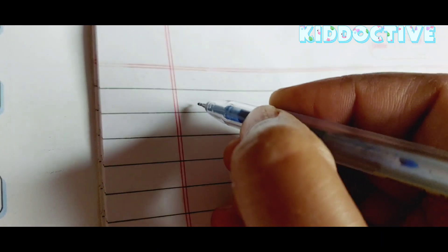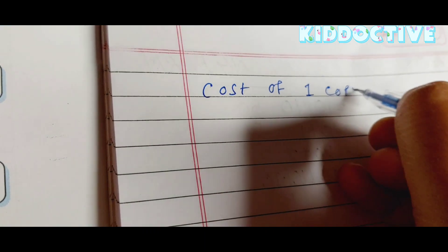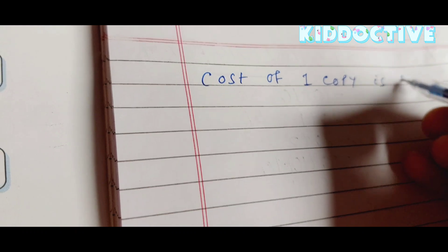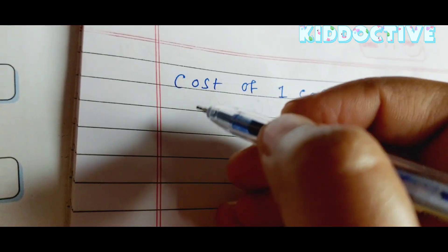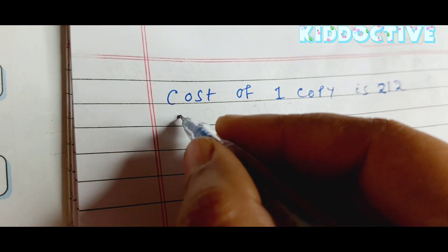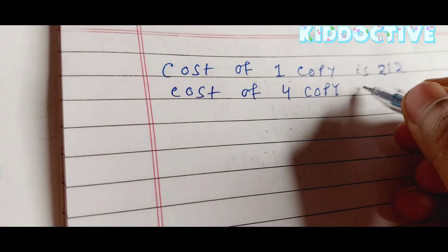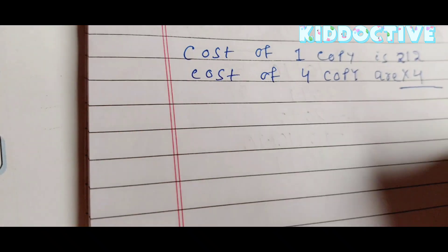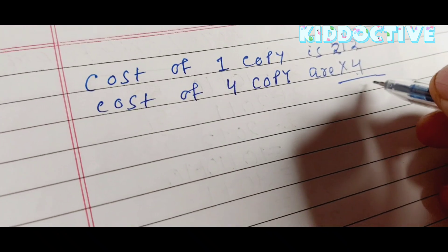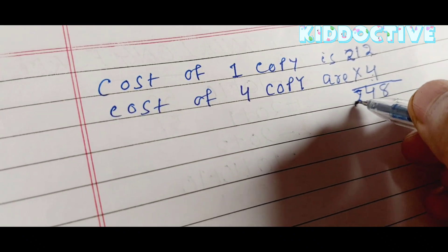How are we going to solve that question? We are going to write: cost of one copy is 12 rupees. Find the cost of four such copies. So cost of four copies are... four twos are eight and four ones are four, so the cost of four copies will be 48.